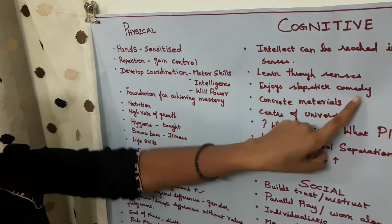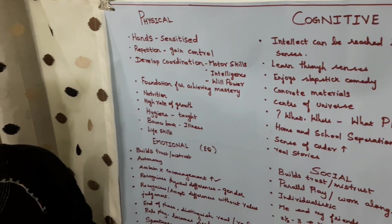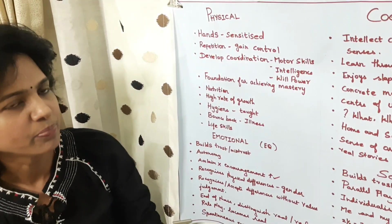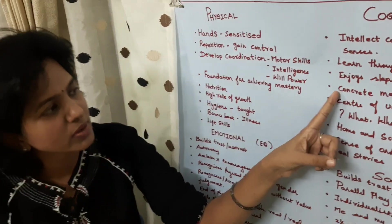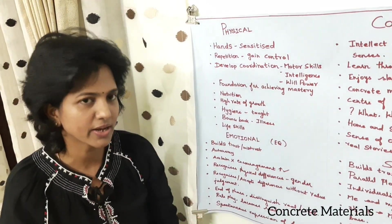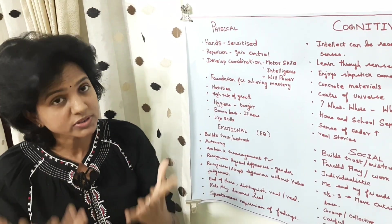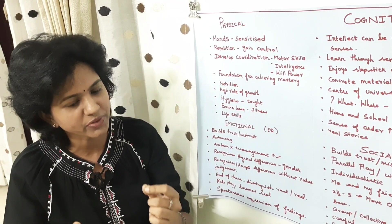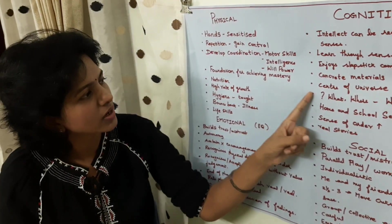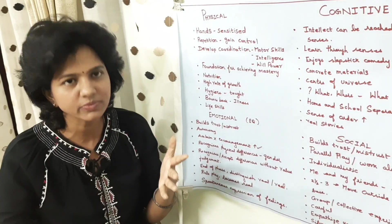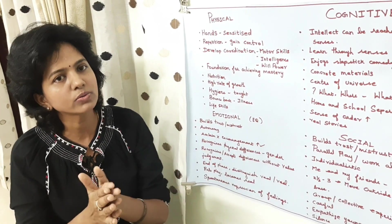Children in this age enjoy slapstick comedy — they love watching anything funny or exaggerated. To learn any concept like shapes or colors, they need concrete materials. Using their senses, they manipulate materials and that is how they learn. Activities like matching, pairing, and sorting help them learn effectively.